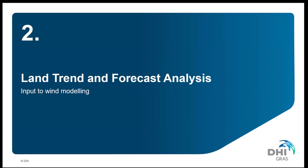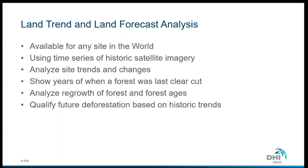Another product we have looked at is the land trend and forecast analysis. This is extremely relevant in sites where there are lots of changes going on. All over the world, there are lots of land changes happening — that can be deforestation, it can be urban buildup — that could affect both historically how the site was performing in terms of wind profiles, but also forecasting what is expected to happen at that particular site. So what we can do with historical satellite images,